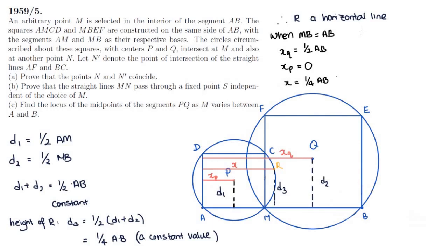When M is all the way on the other side at point B, then AM is equal to AB. So AMCD is the only square. XQ is the entirety of AB, because Q is now at B. So it's the entirety of the way away from point A. XP is half of AB, because P is the center of AMCD, which is now the entire square. X, which is half of XP plus XQ, is here equal to half of 3 on 2 AB, which is 3 quarters AB.